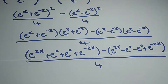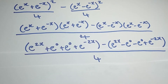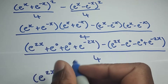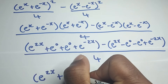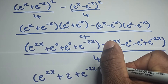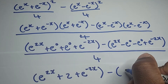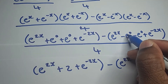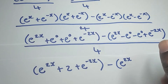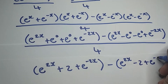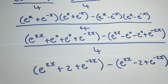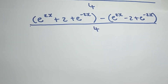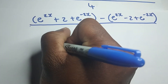Now we simplify both brackets. In the first bracket: e to the 2x, plus e to the zero which is 1, plus e to the zero which is 1 — so 1 plus 1 is 2 — plus e to the minus 2x. In the second bracket: e to the 2x, e to the zero is 1 so we have negative 1, and negative 1 again — so negative 1 minus 1 is negative 2 — plus e to the minus 2x. All of this is over 4.